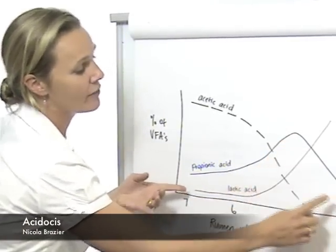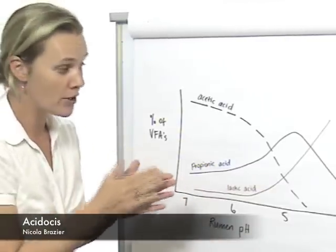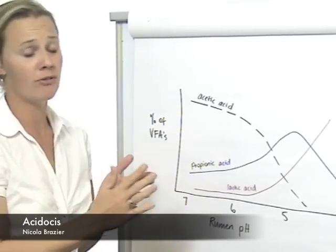Once propionic acid levels also drop off, you can run into problems with milk protein and certainly milk volume.